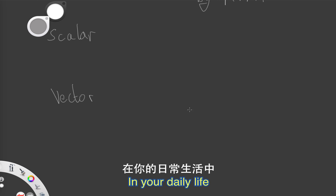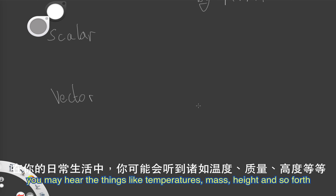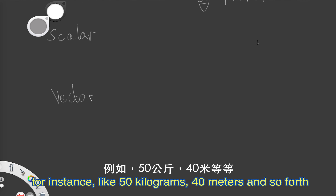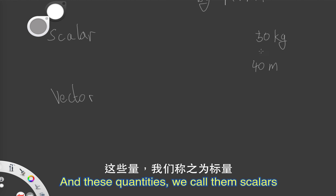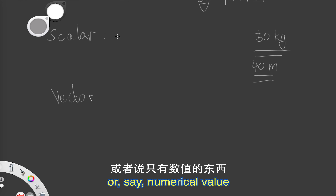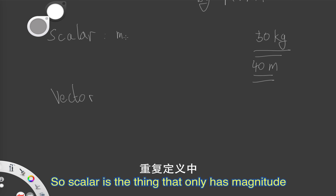In your daily life, you may hear things like temperatures, mass, height, and so forth. When you describe those things, you may use values like 50 kilograms, 40 meters, and so forth. These quantities we call scalars. A scalar is something that only has magnitude, or we say numerical value.